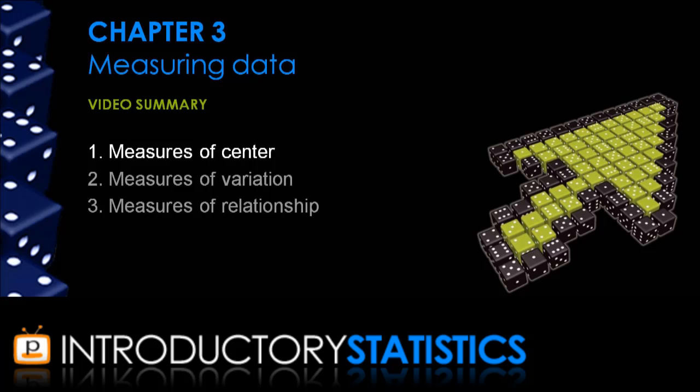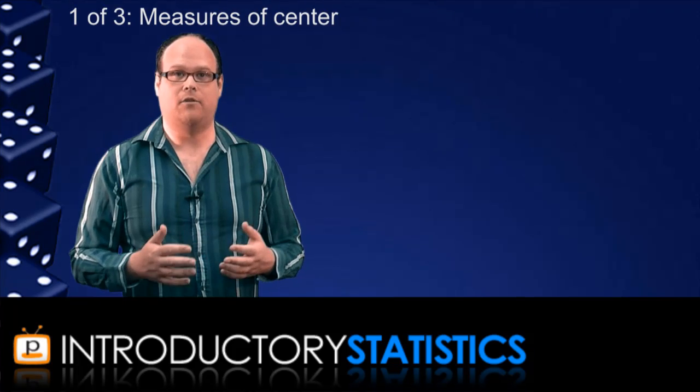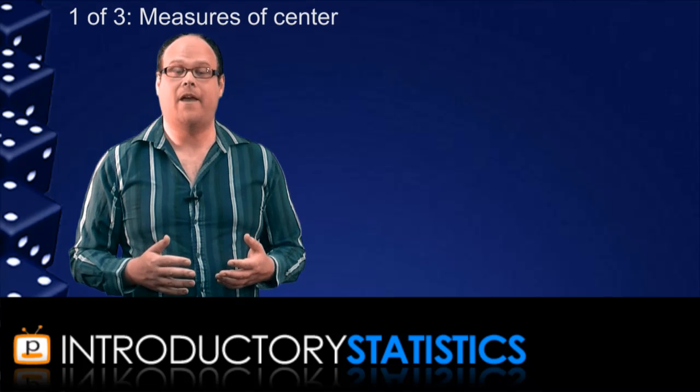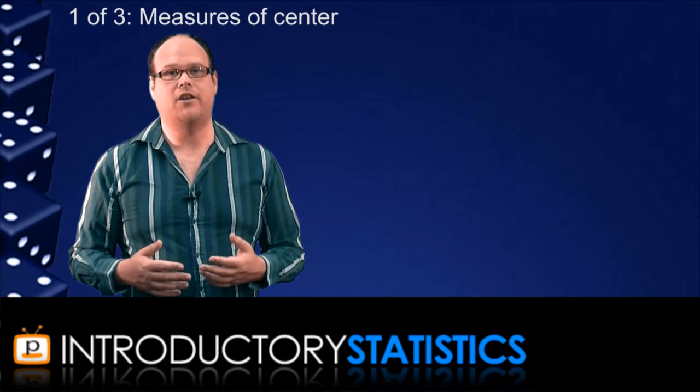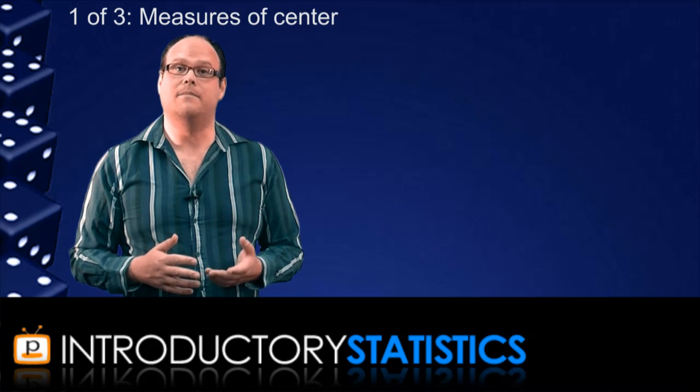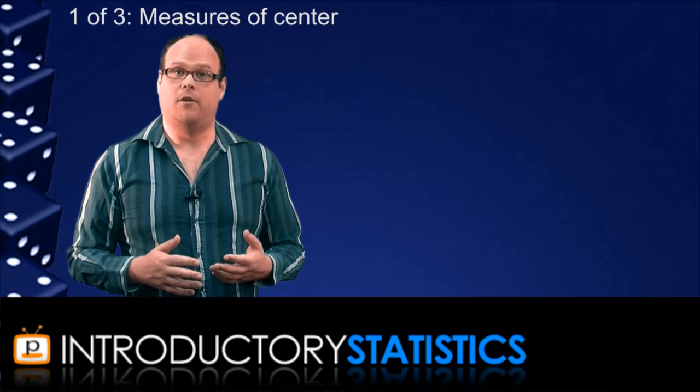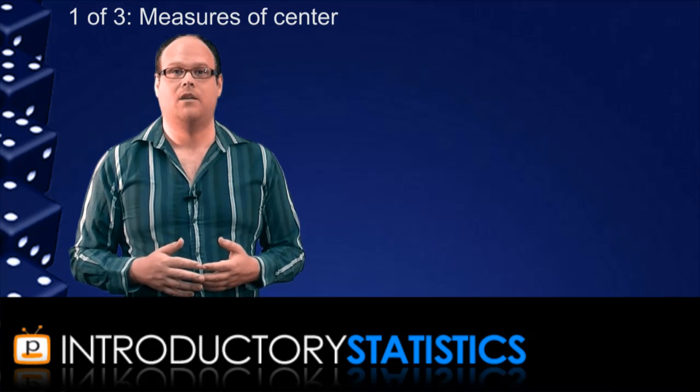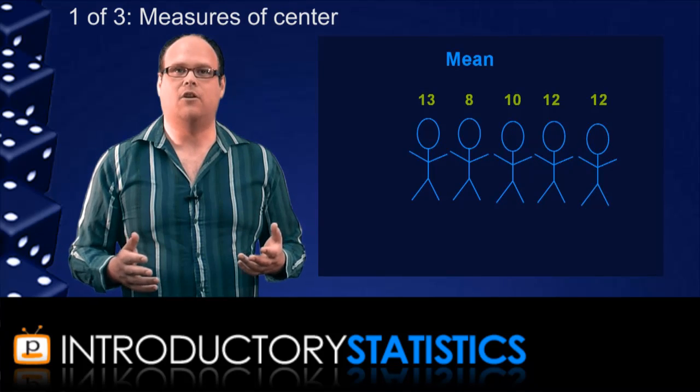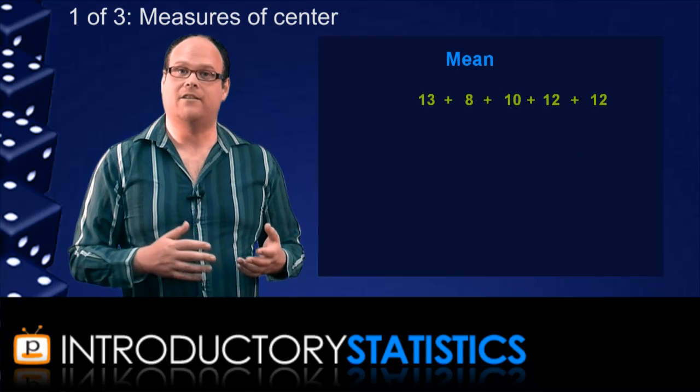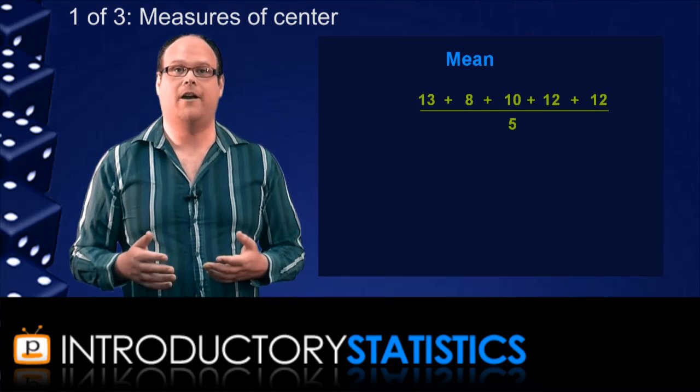Measuring the center of data is all about numerically summarising where data values are. A measure of center is typically a number that gives us some indication of where the data values lie. A very common measure of center is the mean. The mean of a set of numerical data is just the statistical average of all the numbers in that data. For example, we have a sample of five test scores. Then to calculate the mean, we add the five values together and divide by five, the number of data values. In this case, the mean is 11.